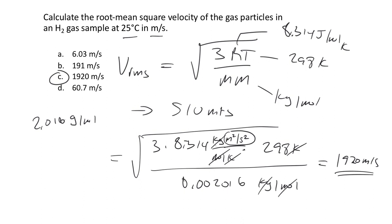While you can calculate average and root mean square velocities with these equations, you can also picture what happens when you change temperature. Increasing the temperature increases the average kinetic energy and therefore the average velocity of the particles. Comparing two different gases: to increase root mean square velocity, decrease the molar mass — go to a lighter particle. The lighter the particle, the faster it moves. The more massive the particle, the lower its overall set of velocities.